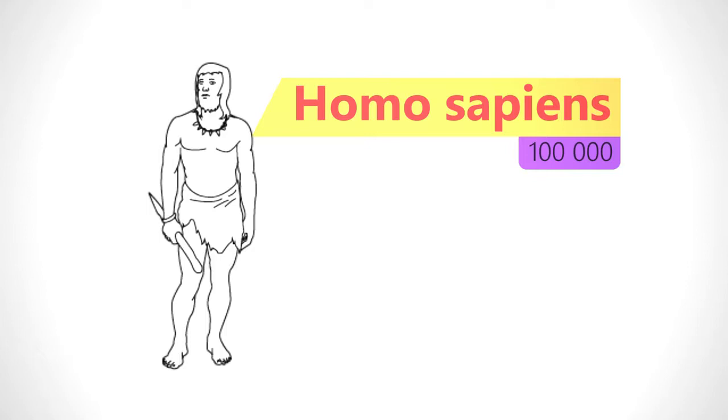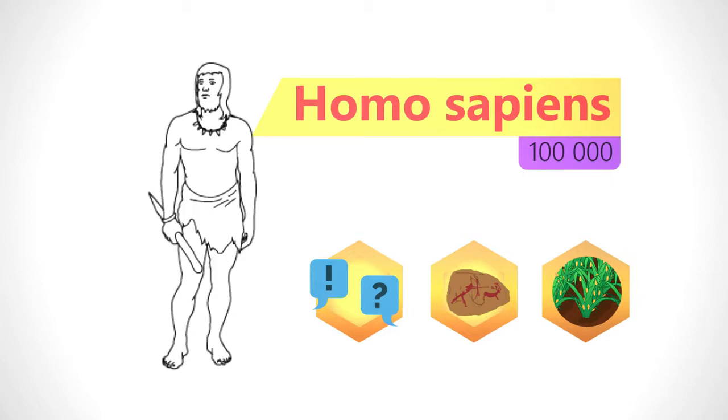In the last 100,000 years, complex language, art, and agriculture emerged. It was these complex developments which helped Homo sapiens survive where other Homo species did not.